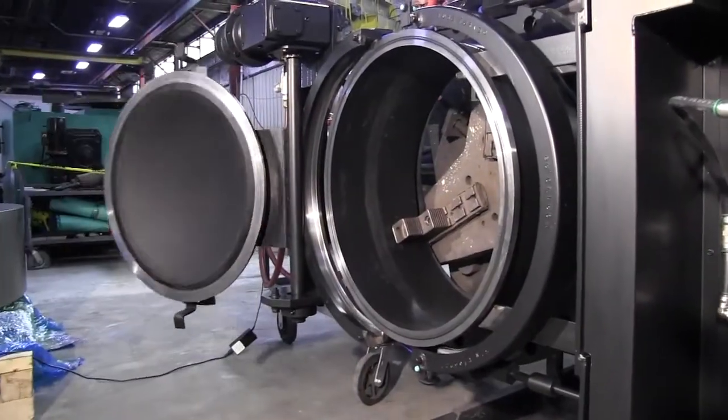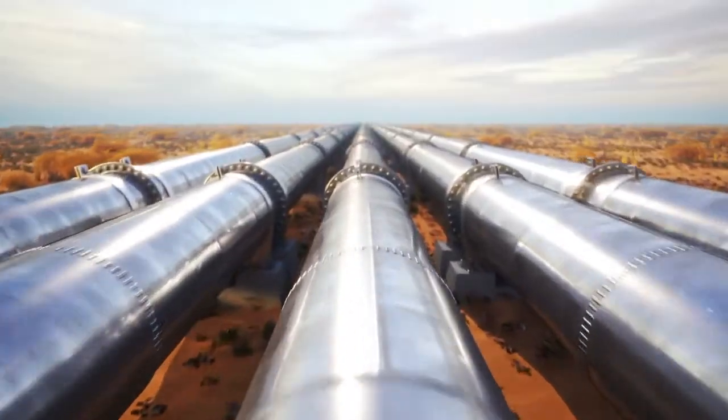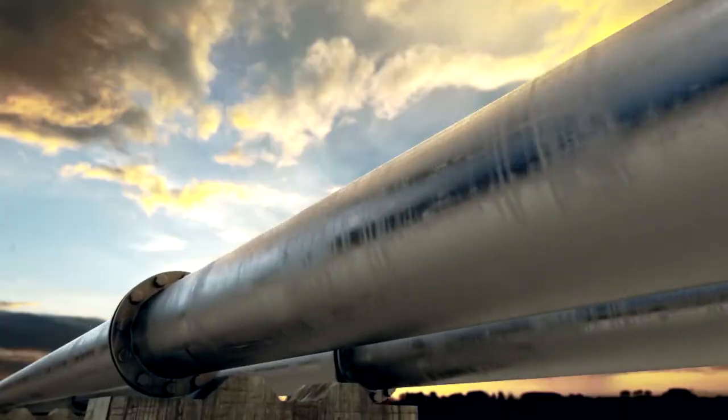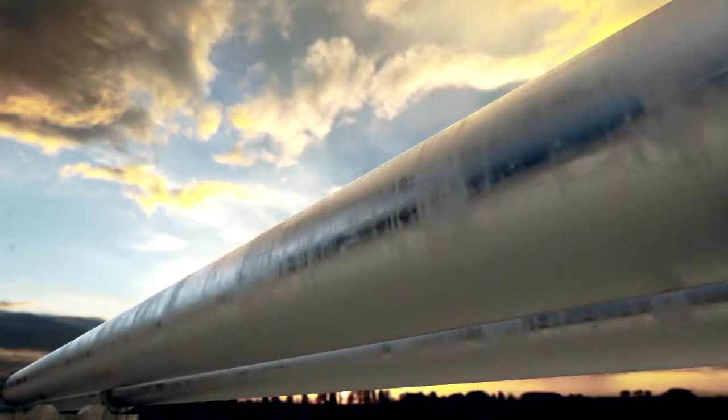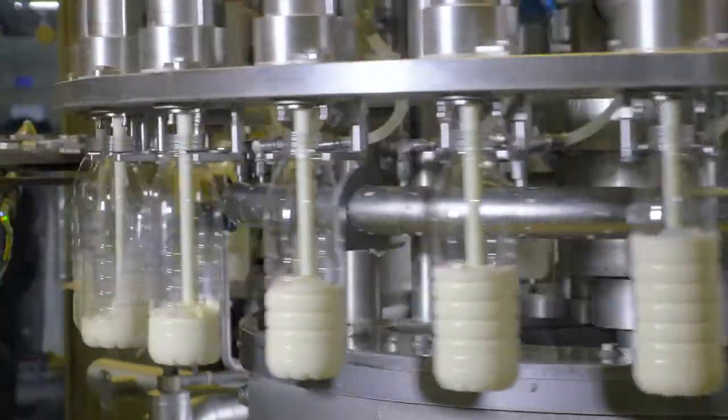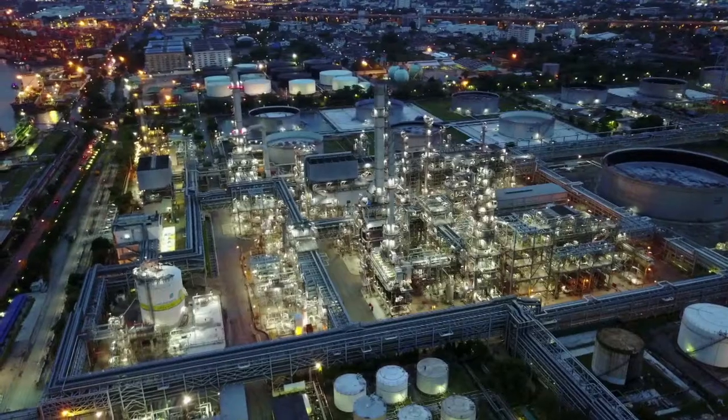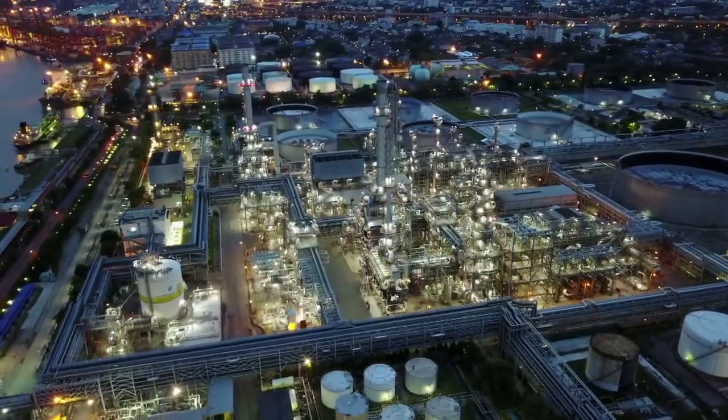Applications for tube turns automated closures include pipeline launchers and receivers as well as operations with batch processes such as pulp and paper mills, food processing, high-pressure carbon dioxide CO2 extraction systems, and can be seen in chemical and petrochemical plants.